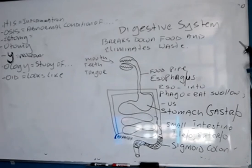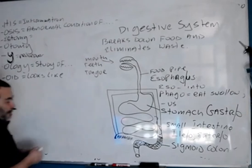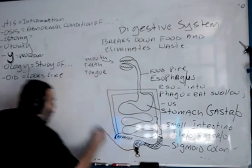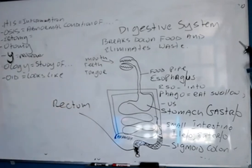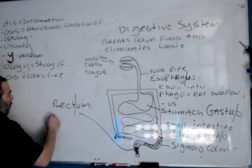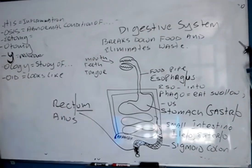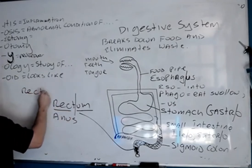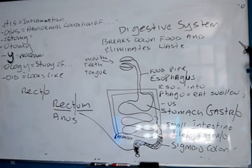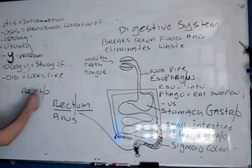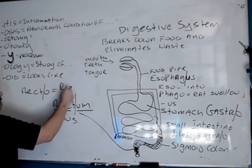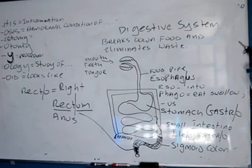Now the last piece right over here is the last part of the digestive tract where the poop actually comes out — and that's called the rectum. There's also the anus. Rectum is made up of two word parts: the suffix -um — remember those suffixes -ic, -ac, -um, -al, -us — and the root rect. Rectum is an interesting word.